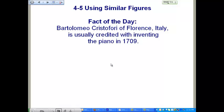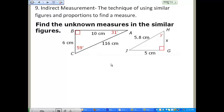Lesson four dash five deals with using similar figures. Yesterday we learned about similar figures and how to identify whether or not they were similar figures. Today we're going to say, now that we know what a similar figure is, how can we use it? First we need to learn our new definitions for this lesson. An indirect measurement is a technique of using similar figures and proportions to find a measure.